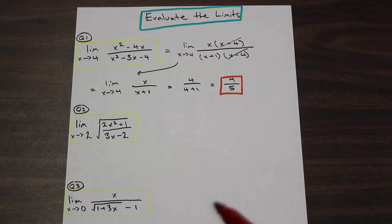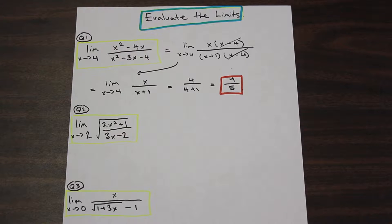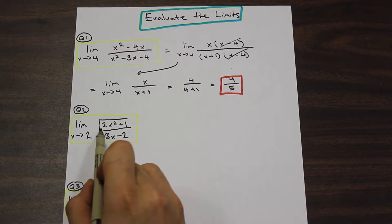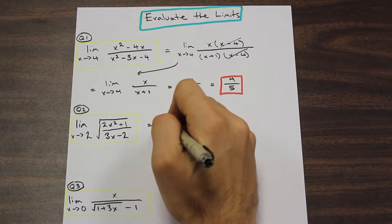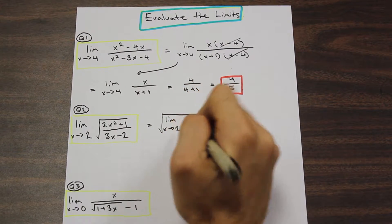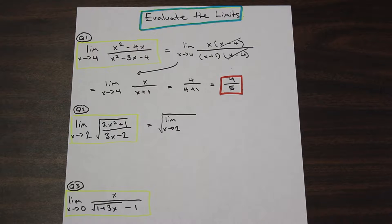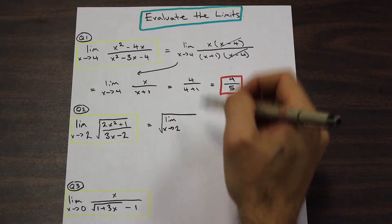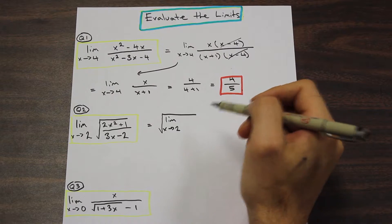Nice and simple. Let's go to the next one — this one looks a little trickier. We have the limit as x approaches two of root (2x squared plus one) over (3x minus two). Using the limit laws, we remember that we can move the limit inside of the root — that is limit law number 11. If you're unfamiliar with the limit laws, go back to our Calculus 1 playlist and find our video on limit laws.